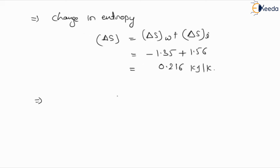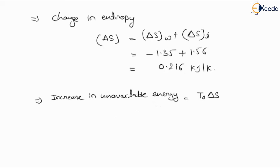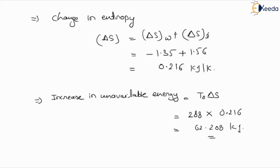We can now determine the unavailability. The increase in unavailable energy is determined by T₀ × ΔS. The surrounding temperature T₀ is 288 Kelvin, and ΔS is 0.216, so the final value is 288 × 0.216 = 62.208 kJ. This is the value of increase in unavailable energy and the answer to this question.